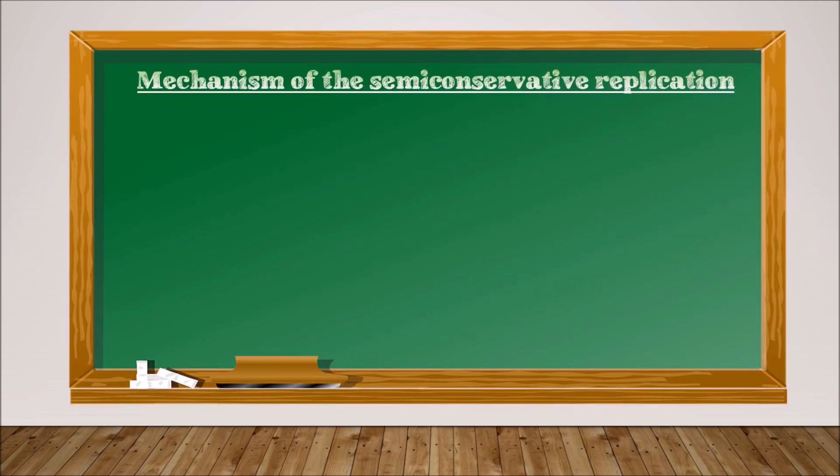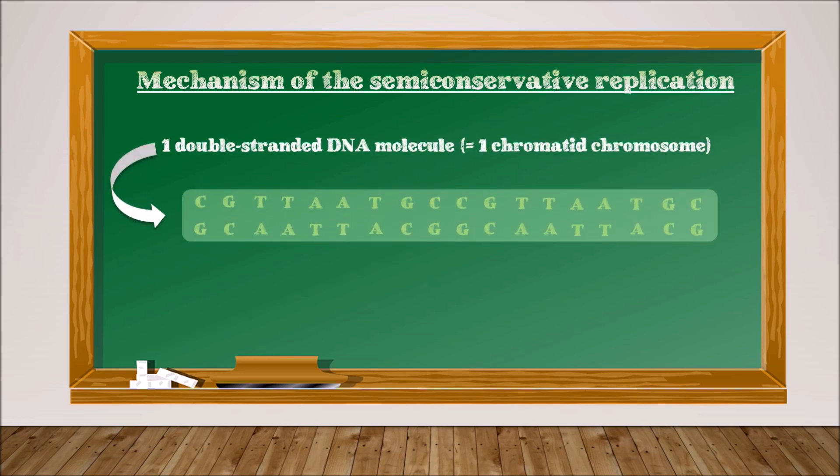In order to get a two chromatid chromosome from a one chromatid chromosome, the DNA molecule must undergo semi-conservative replication. We start with a double-stranded DNA molecule, which is a one chromatid chromosome.